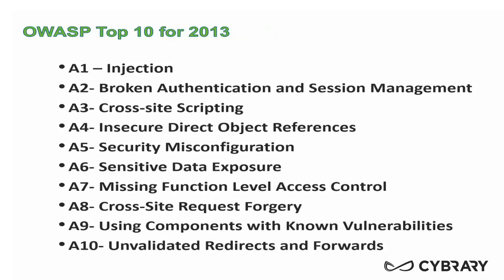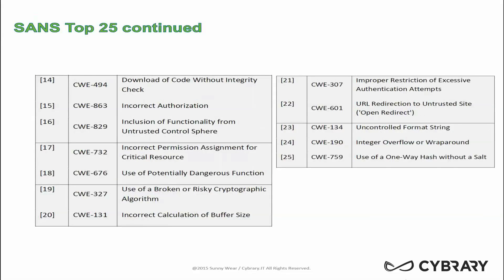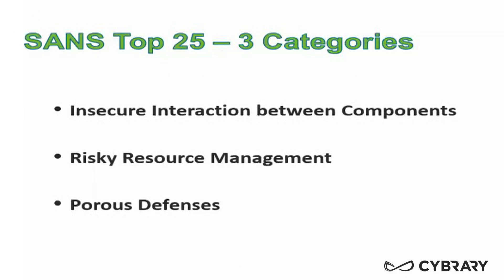The OWASP Top 10 for 2013 — we're going to go through this list extensively. And then the SANS CWE Top 25: basically we are going to cover all of the categories that are not previously covered in the OWASP section. There are three main categories that I've broken the material up for the SANS Top 25 into. The categories include insecure interaction between components, risky resource management, and porous defenses.